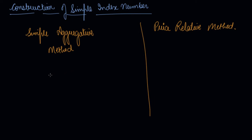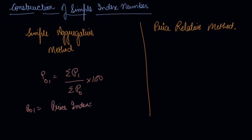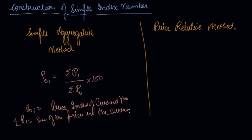In the simple aggregate method, to find out the index number you add all the prices of the current year in the numerator, and all the prices of the base year in the denominator, multiplied by 100. So P01 is the price index of the current year, where P1 is the sum of prices in the current year and P0 is the sum of prices in the base year.